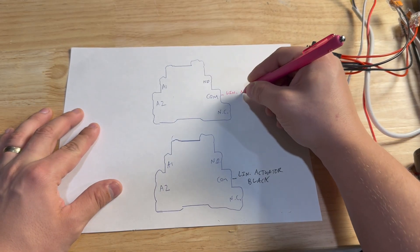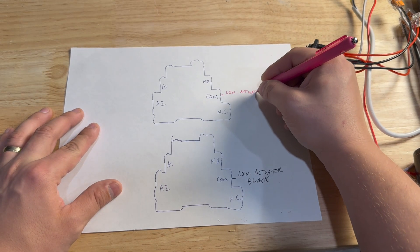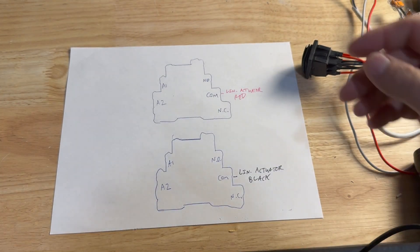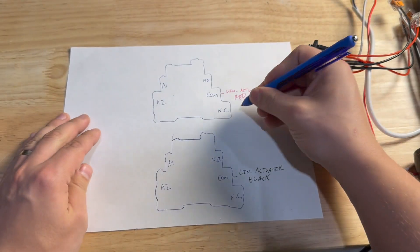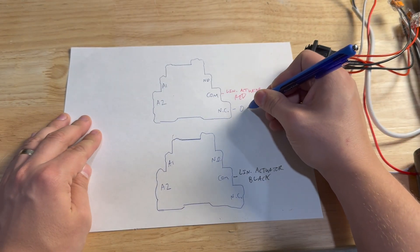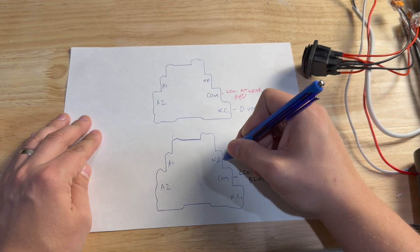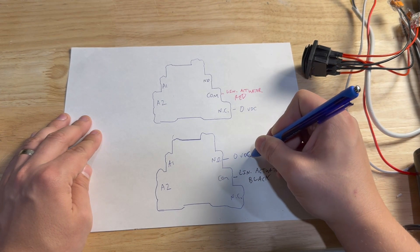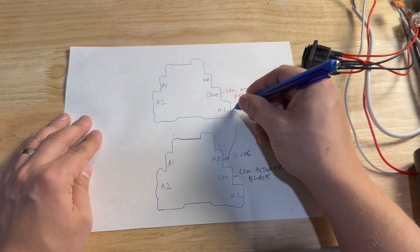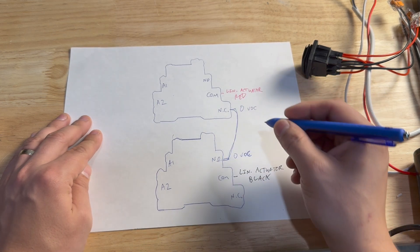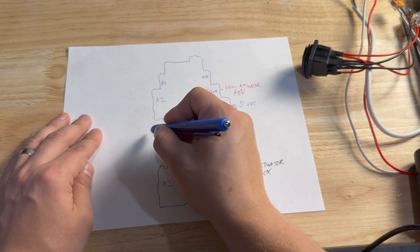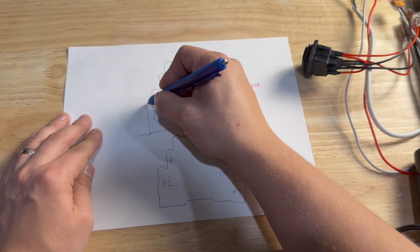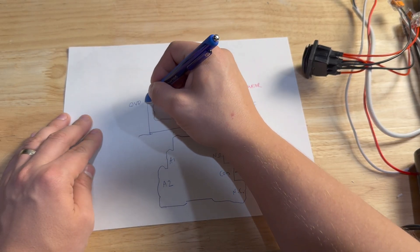Then the other side has a normally open, normally closed and common contact. Common describes the wire that gets switched between normally open and normally closed channels. Normally closed means when the relay is not active or energized, the channel is making contact with the common channel. Then normally open means the opposite, where it's not in contact with the common wire unless the relay is energized, but when that happens, the common channel gets pulled into contact with the normally open channel and is no longer making contact with the normally closed channel.